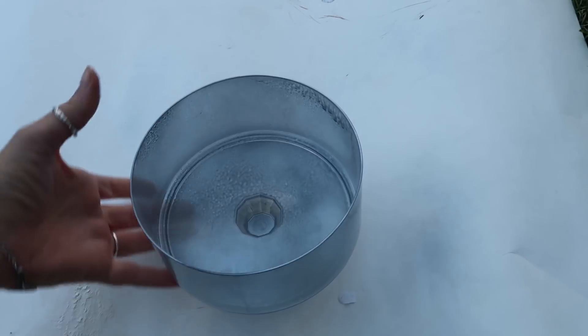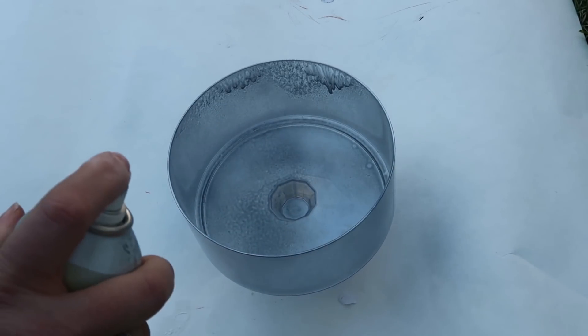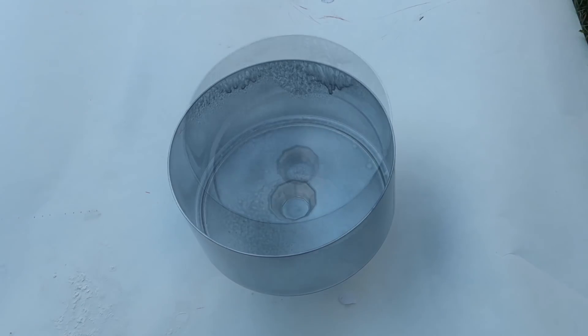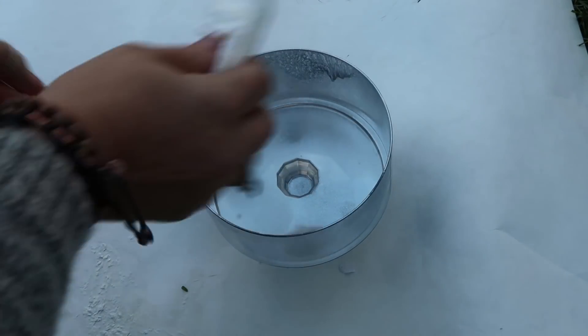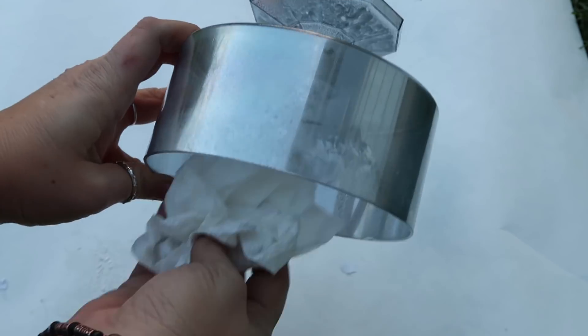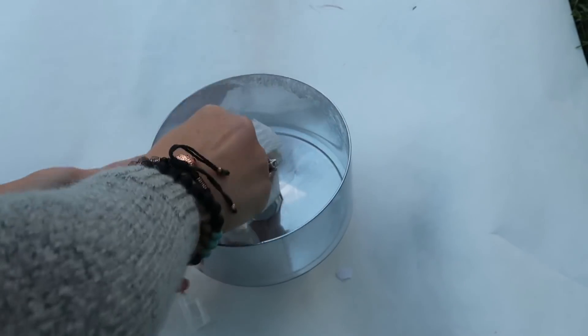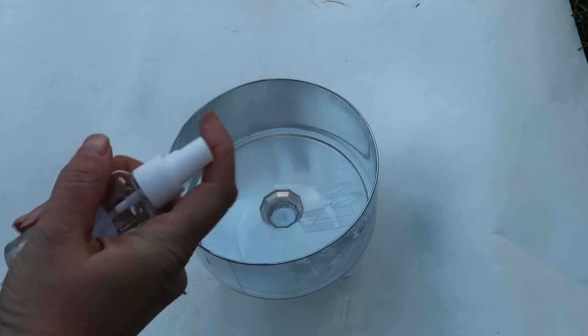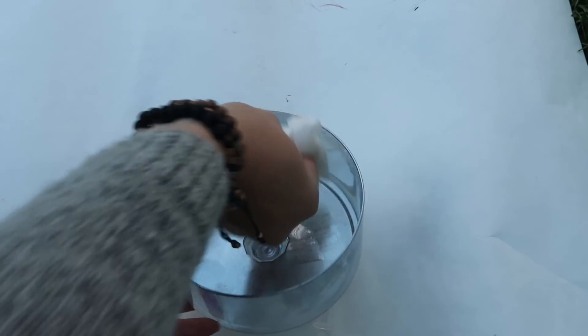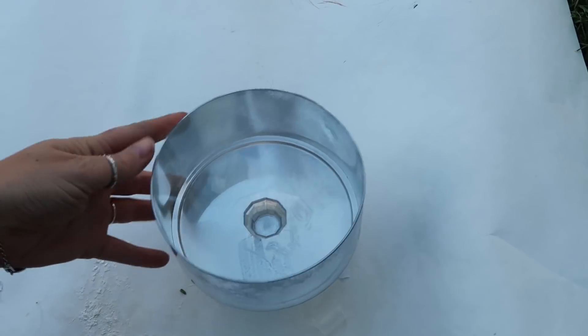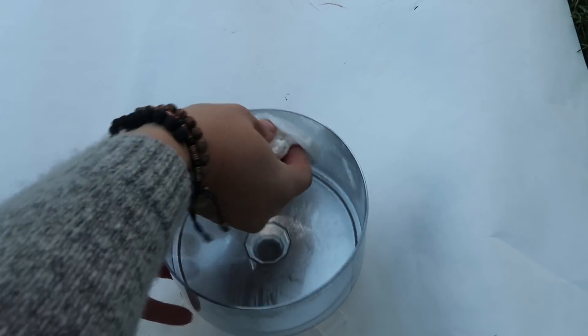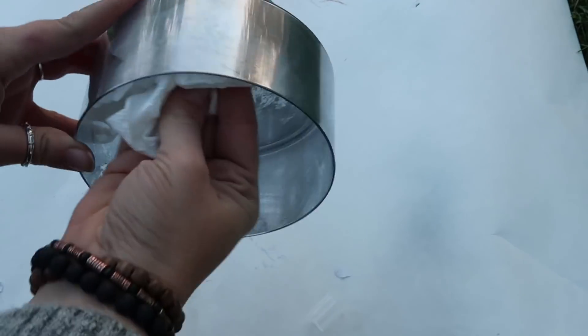So I just sprayed this bowl and it doesn't matter if you get the little leaky spots because you're going to take a wet paper towel and some vinegar and water mixed together and spray it where you just spray painted and dab it with the paper towel. This is going to give you that old vintage look like the mercury glass look.